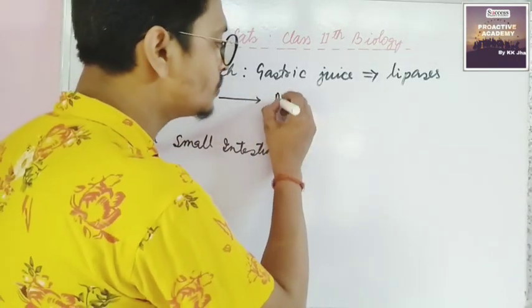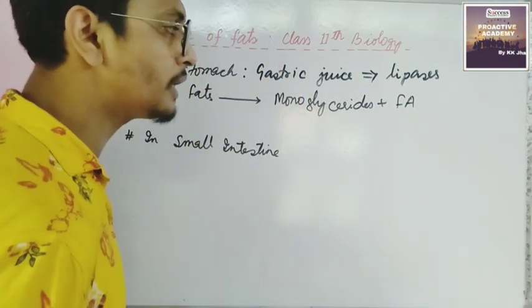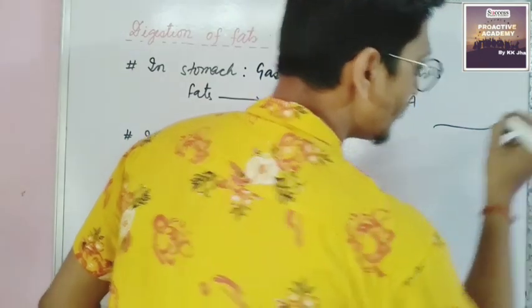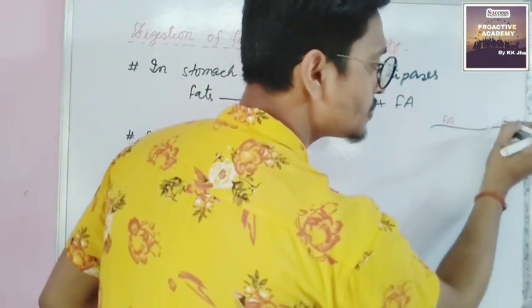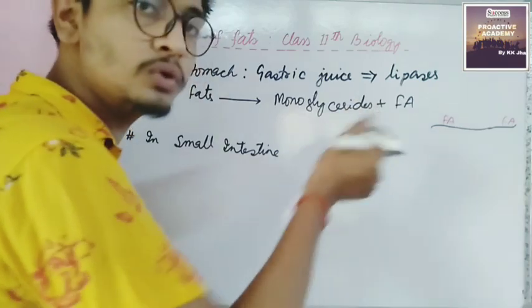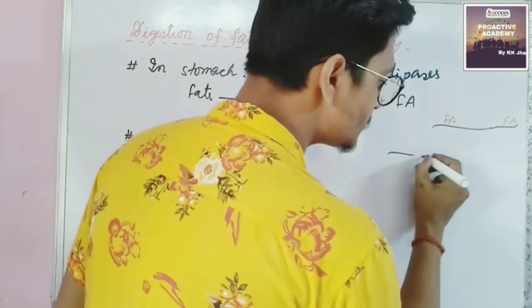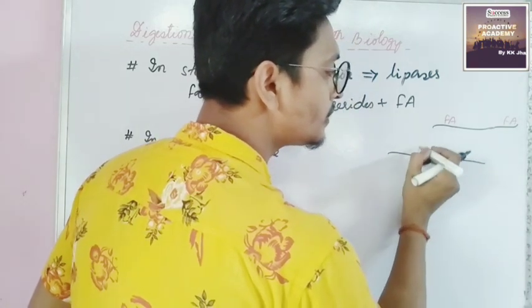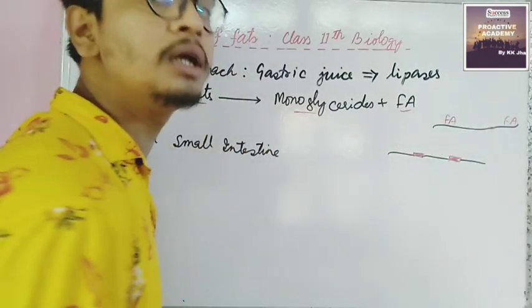Fats are digested into monoglycerides and fatty acids. A single chain of fatty acid is called a monoglyceride. If two chains of fatty acids are joined together by a covalent bond, it is called a diglyceride. If there are three fatty acid chains joined by covalent bonds, it is known as a triglyceride.